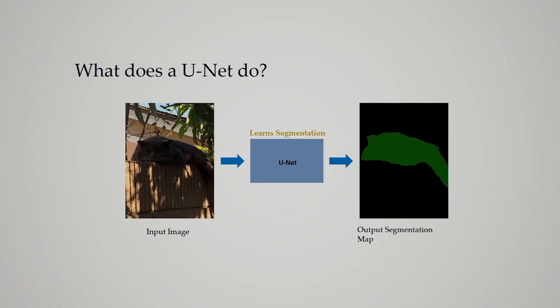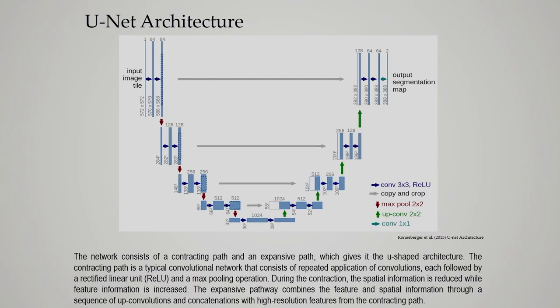Similarly, corresponding to another input image, the UNET learns segmentation and produces the output segmentation map. So the input image is available and the corresponding output segmented image is obtained. Let us now discuss the structure of UNET — the UNET architecture.